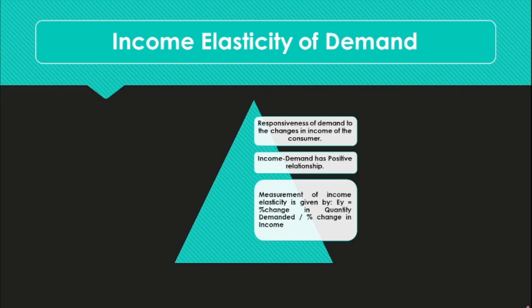What happens in this case is that with the increase or decrease in the income of the consumer, the quantity demanded by the consumer also increases or decreases respectively. That extent or the proportionate change in the quantity demanded along with the change in the income of the consumer is called income elasticity of demand.